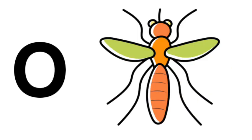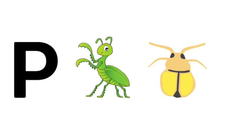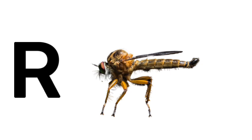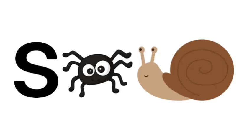O is for Owlfly, P is for Praying Mantis and Planthopper, Q is for Queen Bee, R is for Robberfly, S is for Spider and Snail.